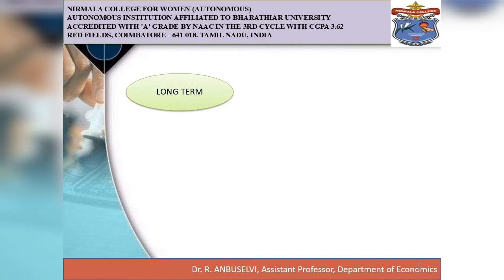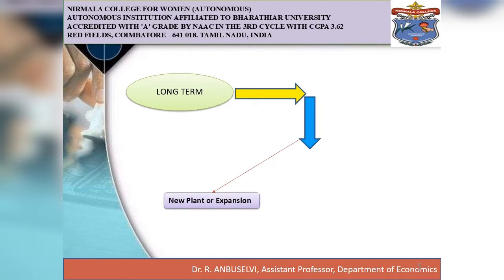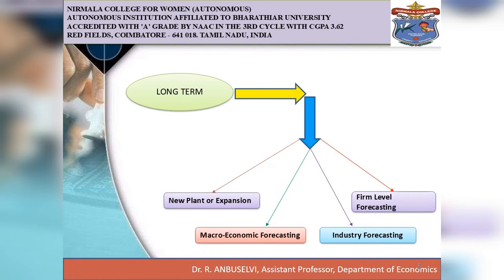The second type is long-term demand forecasting. In long-term demand forecasting, businessmen should know about the long-term demand for the products. They should plan for a new plant or expansion of an existing unit, which depends upon long-term demand for products. It generally depends upon four components: new plant or expansion, macroeconomic concepts, industry forecasting, and firm level forecasting. It has two important drawbacks: the probability of error may occur in very high ways, and it is very difficult to predict cost of production, price level, and market competition in the long run.